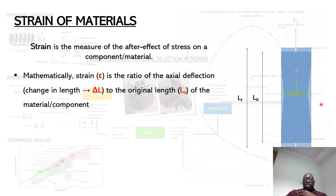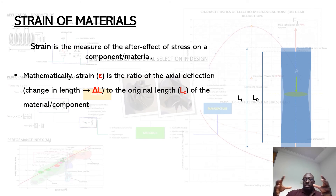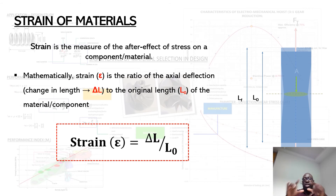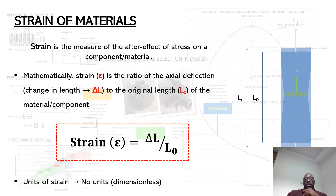Strain is defined as the measure of the after-effects of stress on a given component. Mathematically, strain — characterized by the Greek letter epsilon — is the ratio of the axial deflection, delta L (the change in length, being the difference between extended and original length), divided by the original length, L₀. Since you have length divided by length, strain is dimensionless — it has no units. It's just a ratio.